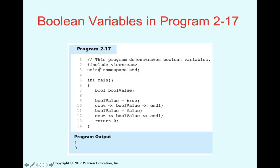In the example, we define a variable 'bool_value' of type bool and assign it 'true'. When printed, it displays 1. If we change the value to false and print it again, it displays 0. We use the same variable to store true first (prints 1), then false (prints 0).